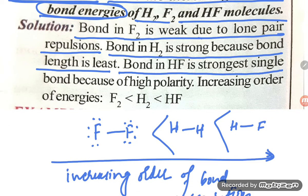Bond in HF is strongest single bond because of highest polarity. This is the negative and this is the positive, so highest polarity.